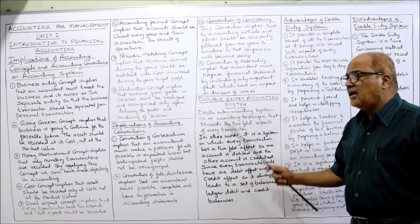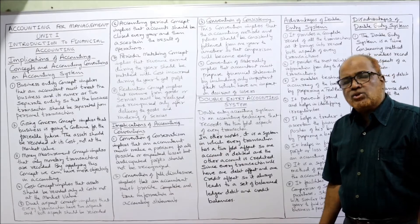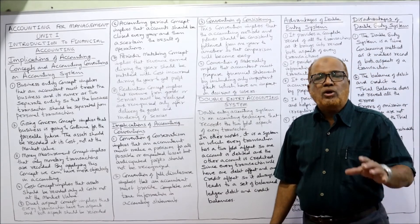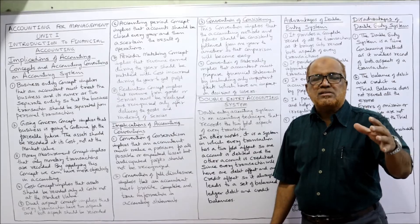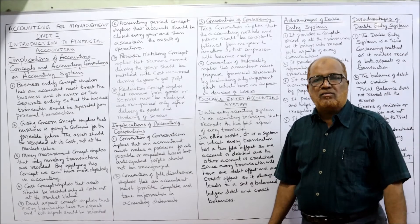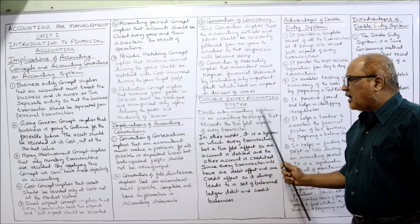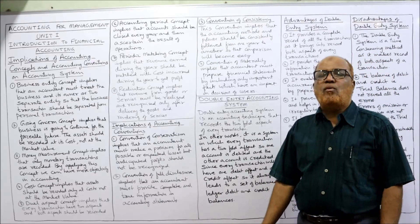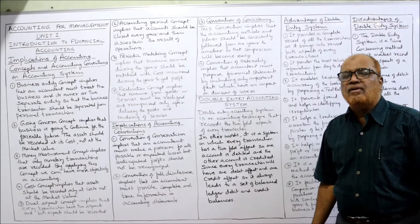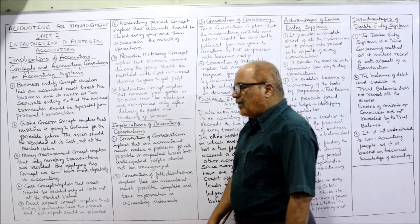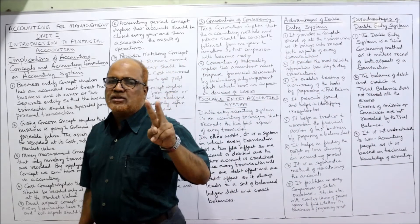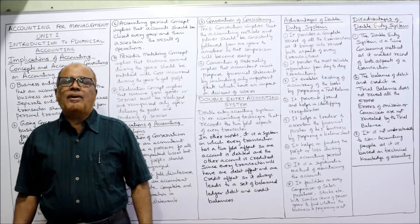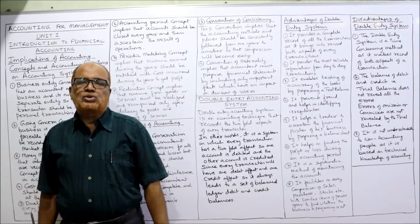The second part is the double entry accounting system. This question is also frequently asked in examinations. Double entry accounting system is an accounting technique that records the two-fold aspect of every transaction. Every transaction has a dual aspect — one giving aspect and another taking aspect.